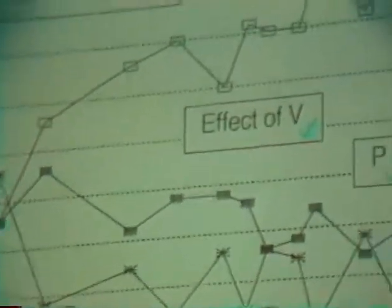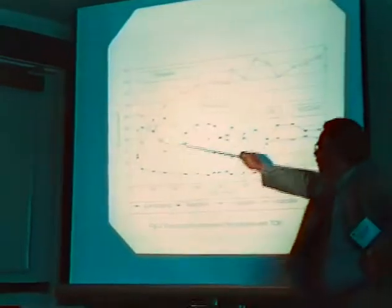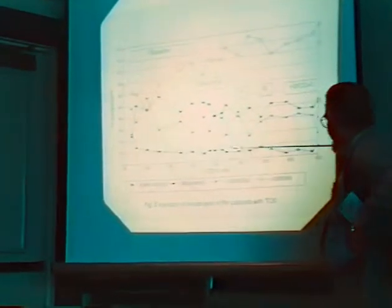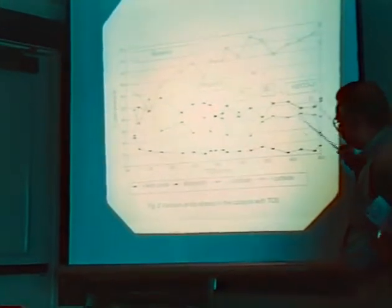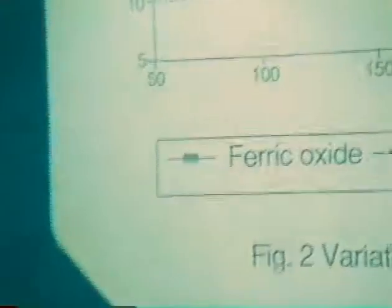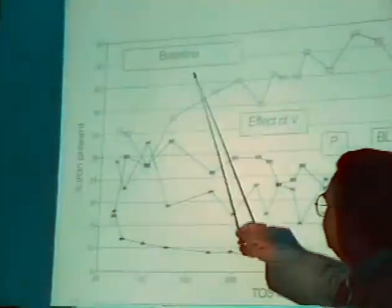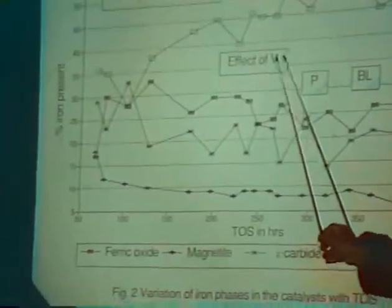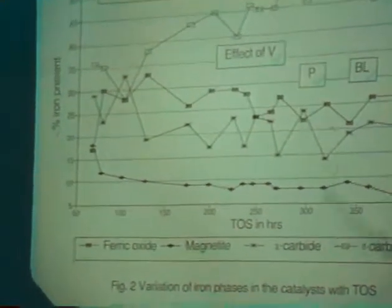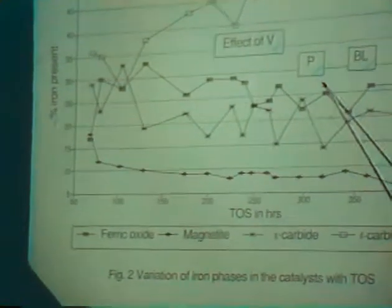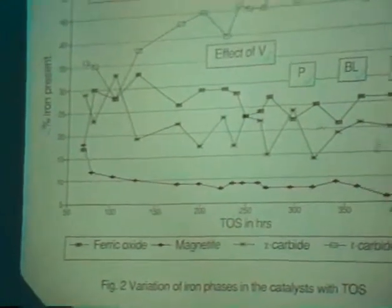Here we present the variation of different phases as a function of time on stream. As mentioned earlier, we see four different phases, and this is how they vary as a function of time on stream. You notice that the epsilon carbide progressively increases, whereas the chi-carbide progressively decreases, and the magnetite progressively decreases. The oxide and the chi-carbide show some sort of correlation. They are reciprocating each other. When one is high, the other is low. This is a quite interesting observation. This is the baseline region, and this is the time duration when the space velocity was changed, and this is when the pressure was altered. Again at this point, we are back to baseline conditions. At this stage, the syngas ratio was changed, H2 to CO changed to 2 from 0.67.